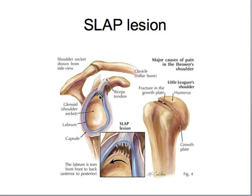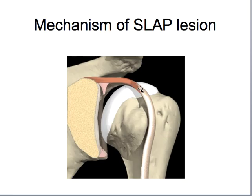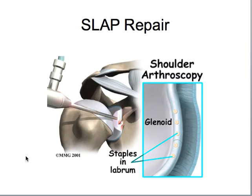SLAP lesions are primarily due to deceleration forces in throwing. They're difficult to diagnose — they can mimic a lot of different kinds of shoulder problems, and decisions about whether to fix them can be complex. The bicep long head tendon comes up and attaches into the labrum, and repetitive pulling can pull that labrum down. But they can be repaired — going in to the anterior portion and stapling the labrum back down to the glenoid fossa — and it's done arthroscopically.